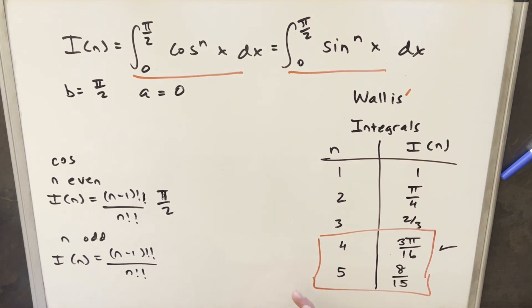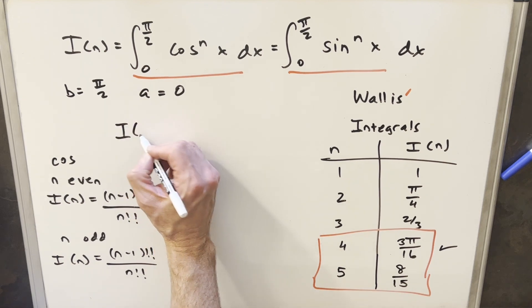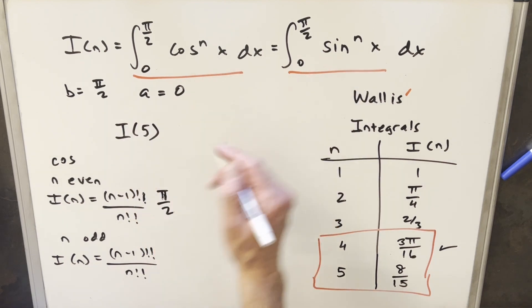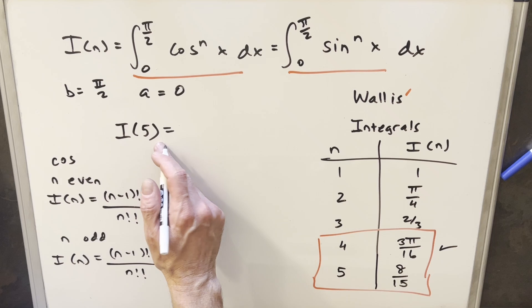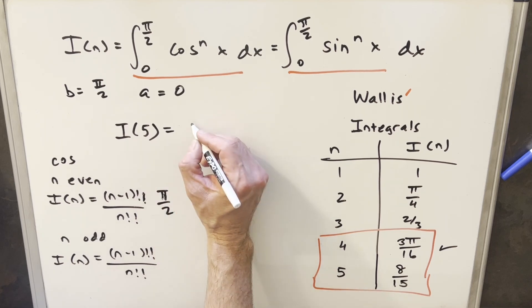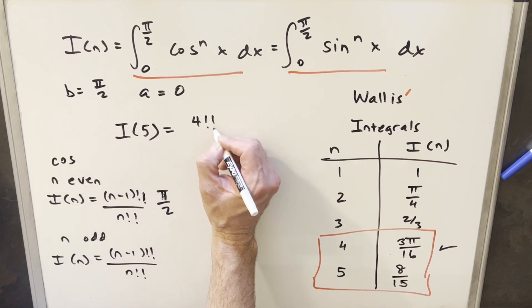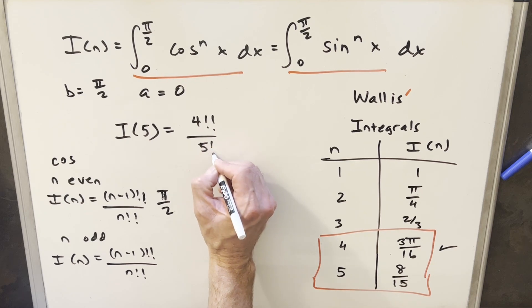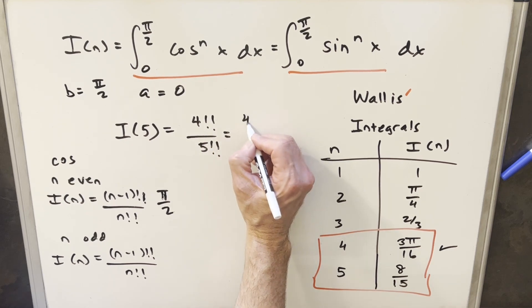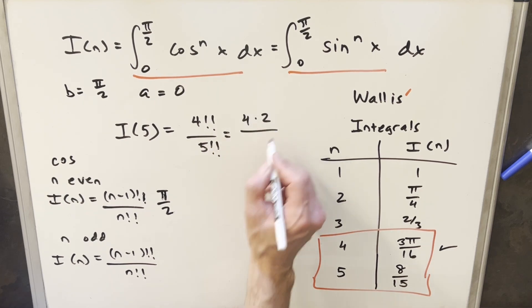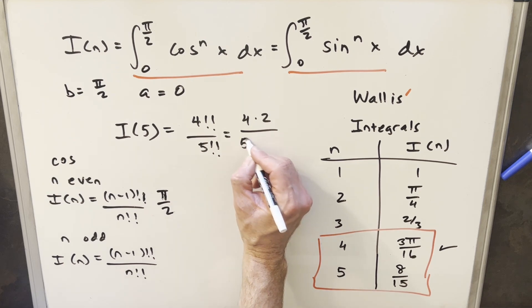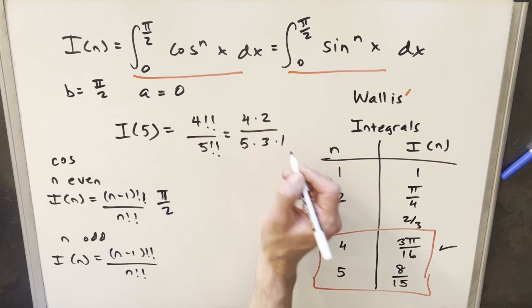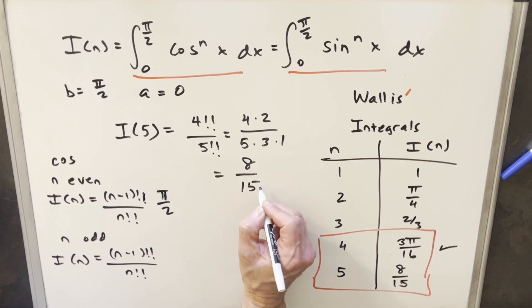And then let's just look at what happens when n is 5. So we're looking for I of 5, where our exponent is going to be 5 here. So for this 5's odd, we'll use this formula down here. So this is just going to be the same thing. It has 4 double factorial over 5 double factorial. That's going to be 4 times 2. 5 double factorial is going to be 5 times 3 times 1. But this is going to just be 8 over 15.